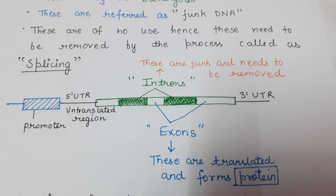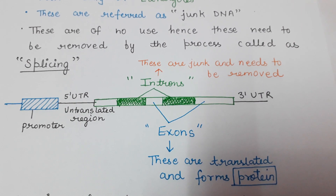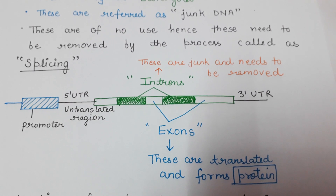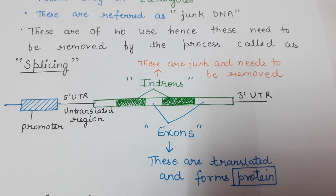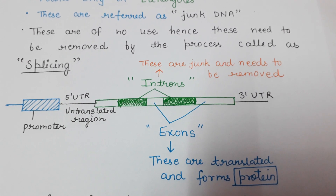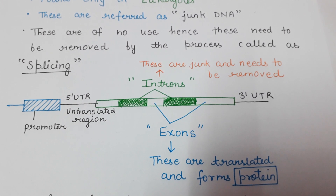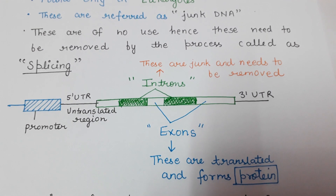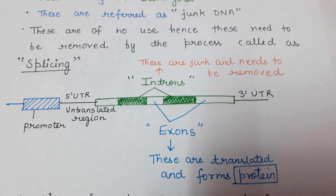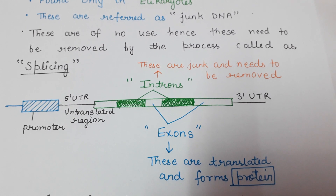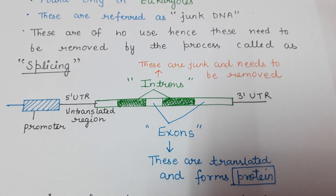In between the 5' UTR and 3' UTR, we have introns and exons. This whole series is called the open reading frame — the region between the 5' UTR and 3' UTR containing the exons and introns is called the open reading frame. The introns are the junk DNA and need to be removed by the process called splicing.